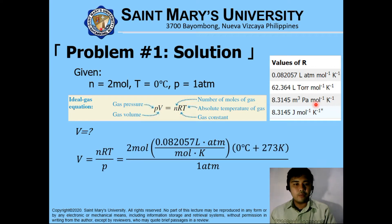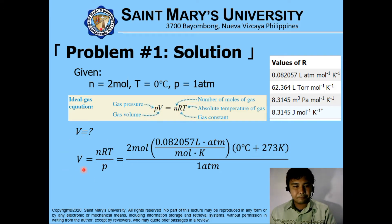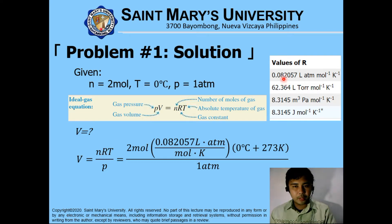We are asked to find for the volume. Just a short manipulation of the ideal gas equations — we have here volume, just divide both sides by the pressure. You can find this formula. V is equivalent to the number of moles of a gas multiplied by the gas constant multiplied by the absolute temperature of a gas divided by its pressure. We are given 2 moles, and the gas constant R that we have used is this one.